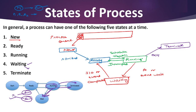Let me summarize all the states. New state: new processes are created here. Ready state: process is ready for processor or resource allocation. Running state: process is being executed. Waiting state: process is waiting for signals — whether to move to Ready or Running state. Terminate state: process execution is completed at this point.